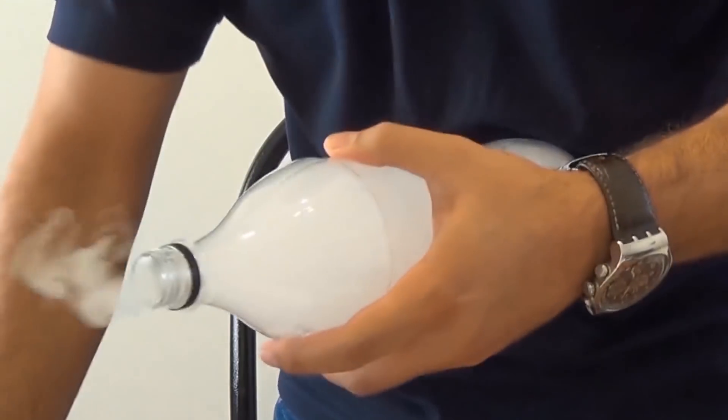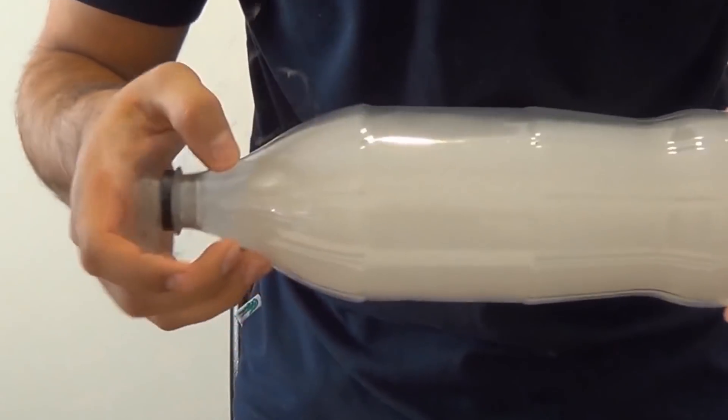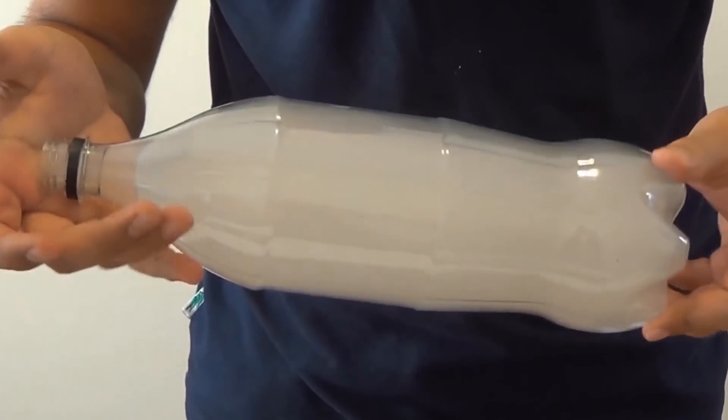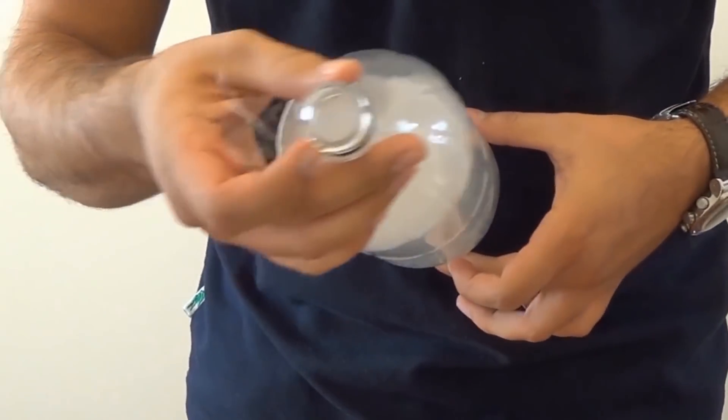Start pumping the bike pump, holding the end firmly in place inside the bottle. When you've given around 10 pumps, quickly remove the pump from the bottle and prepare to be amazed by the sight of clouds immediately forming in the bottle. The higher the pressure inside the bottle, the more impressive the effect is.